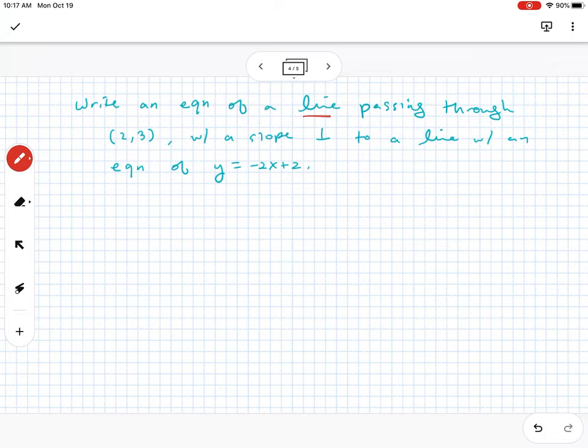I want you to notice here a couple things. Write an equation of a line, so we're already thinking y equals mx plus b, slope-intercept form, or even point-slope form or standard form, passing through this point 2, 3. So here's my x and y with a slope that is perpendicular to a line with an equation of y equals negative 2x plus 2. So there's all my hints there.